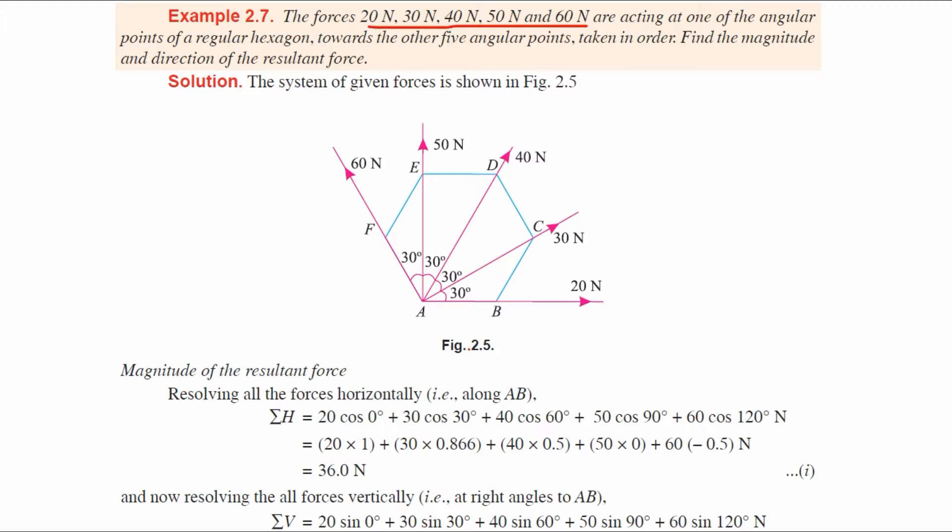The forces are acting at one of the angular points of a regular hexagon towards the other five angular points taken in order. Find the magnitude and direction of the resultant force. First, we have to draw the diagram.